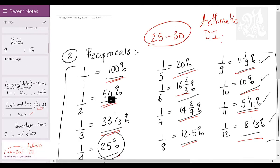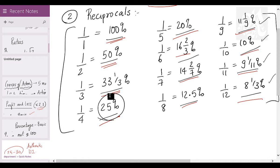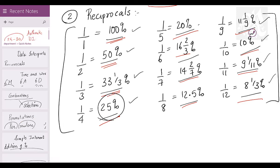The reciprocals look something like this: 1/1 is 100%, 1/2 is 50%, 1/3 is 33 1/3%, 1/4 is 25%, 1/5 is 20%, 1/6 is 16 2/3%, 1/7 is 14 2/7%, 1/8 is 12 and a half, 1/9 is 11 1/9%, 1/10 is 10%, 1/11 is 9 1/11%, 1/12 is 8 1/3%.